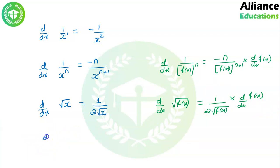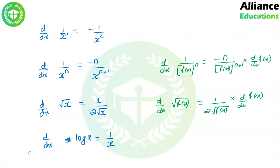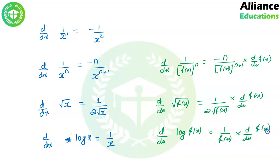Then d/dx of log x — the derivative of log x is 1/x. So d/dx of log f(x) is 1/f(x) multiplied by d/dx of f(x). First we take the derivative of log, then go inside — f(x) was inside — so we take the derivative of f(x).